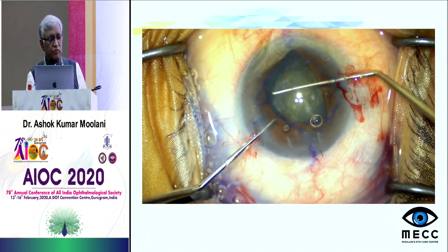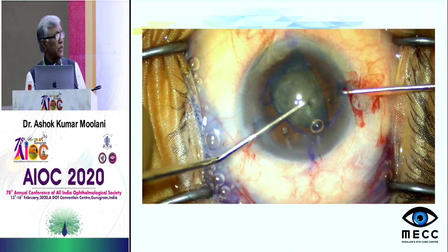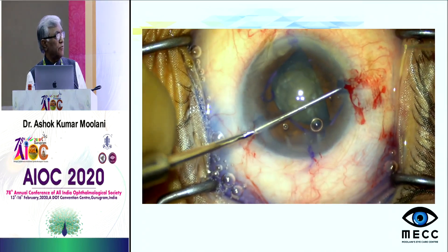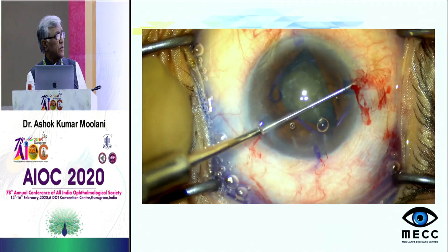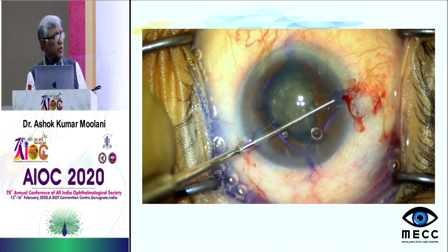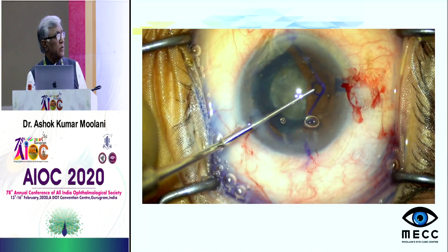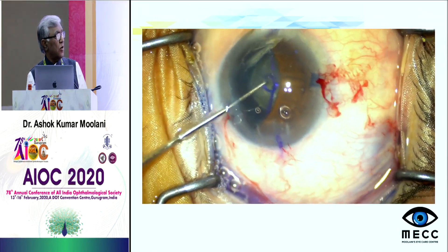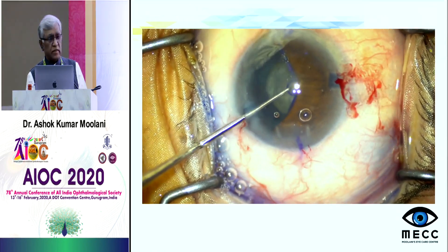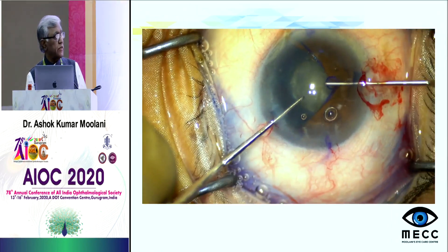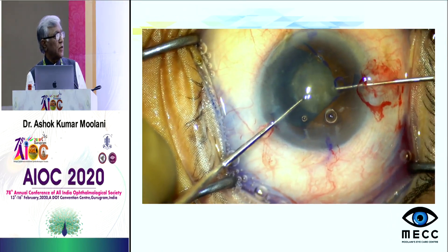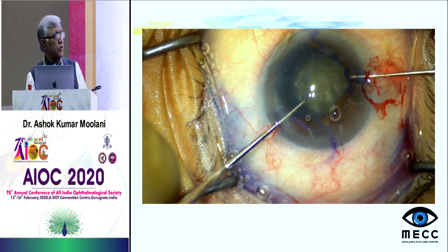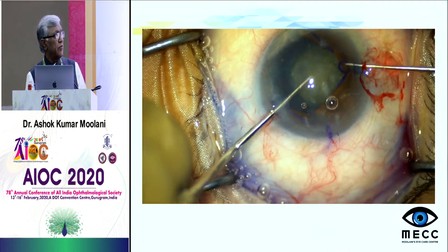After completely placing the Malyugin ring in all four positions, we have a diamond-shaped pupil which becomes more round because it has eight-point fixation, and you are able to perform the phacoemulsification uneventfully.